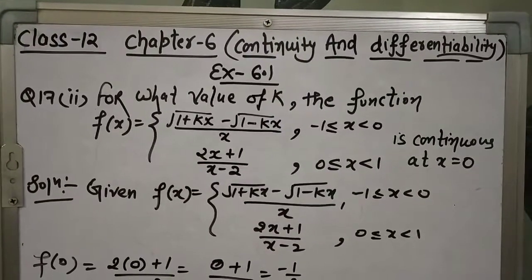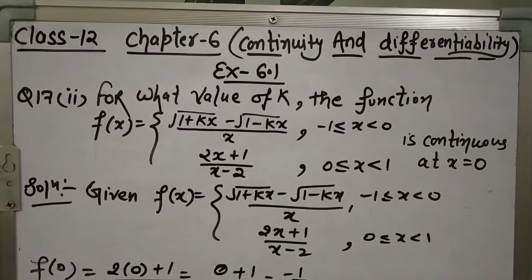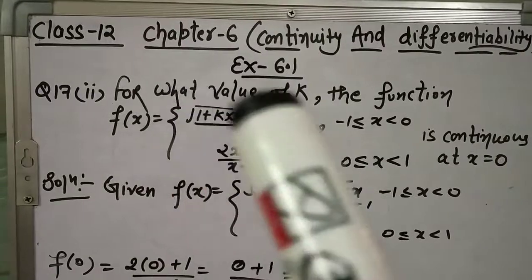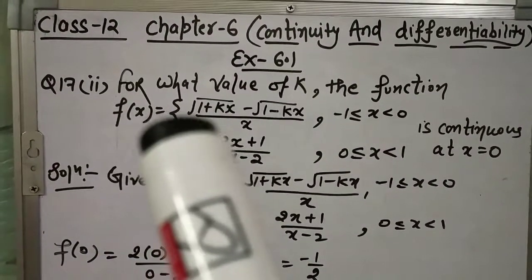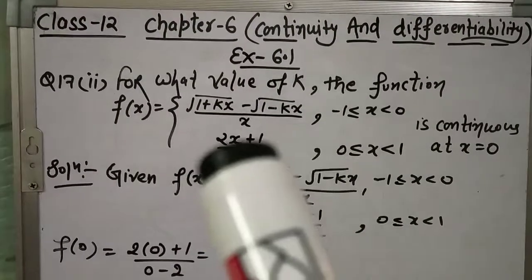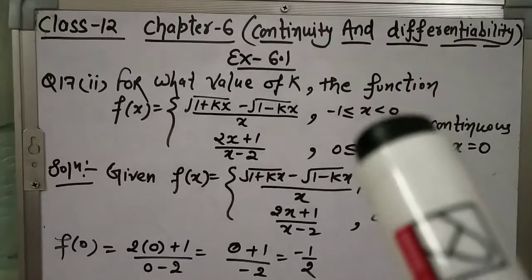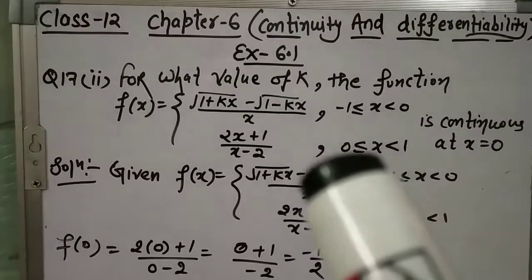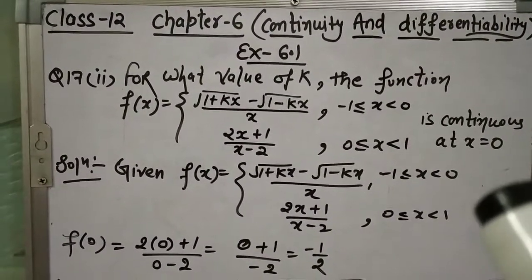Hello students, in the previous lecture we did up to question number 17 first part. Today we will do question number 17 second part. For what value of k the function f(x) is given as k√(1+kx) minus k√(1-kx) divided by x, when x is between -1 and 0, and (2x+1)/(x-2) when x is between 0 and 1, is continuous at x = 0.